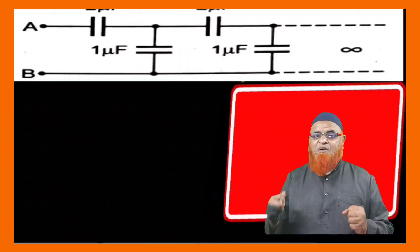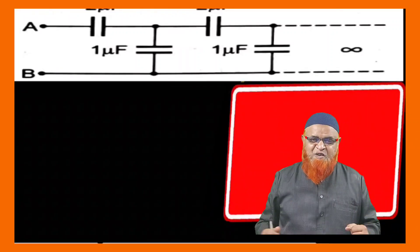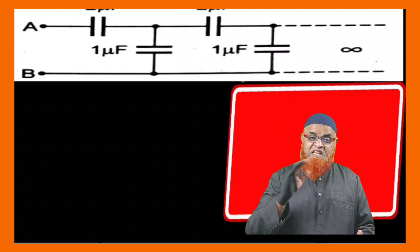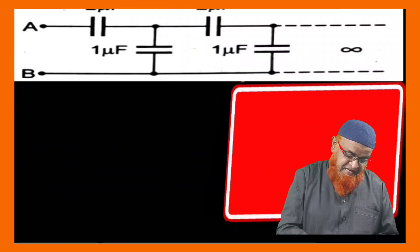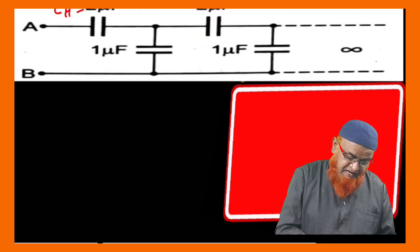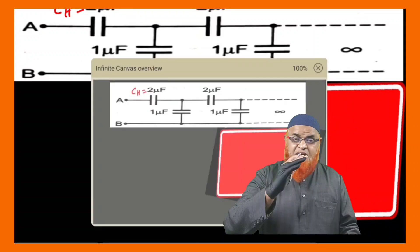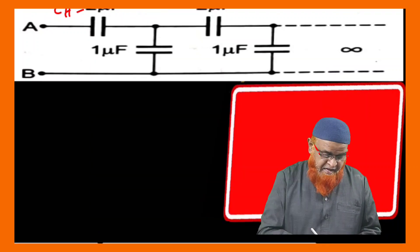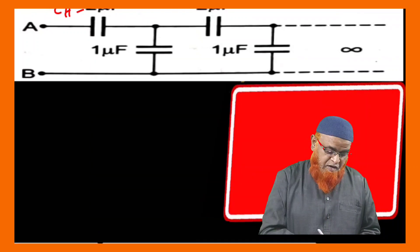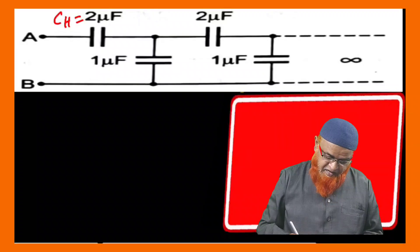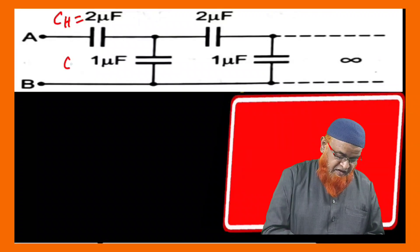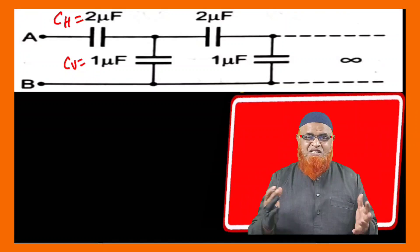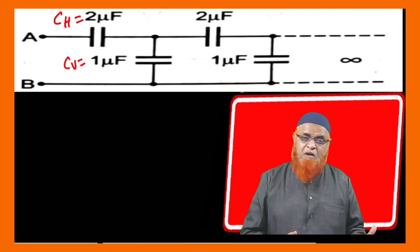Let us find out a shortcut method to this problem. There is a horizontal capacitor C_horizontal = 2 microfarads in an infinite series, and one more capacitor C_vertical = 1 microfarad. Is there a simple shortcut formula to find out the equivalent capacitance? Definitely there is a simple shortcut formula.